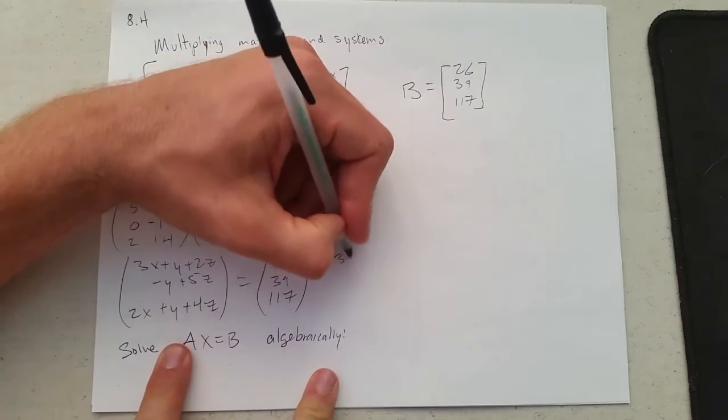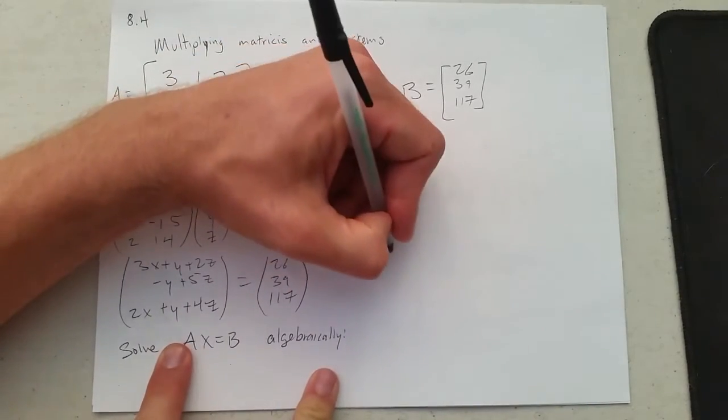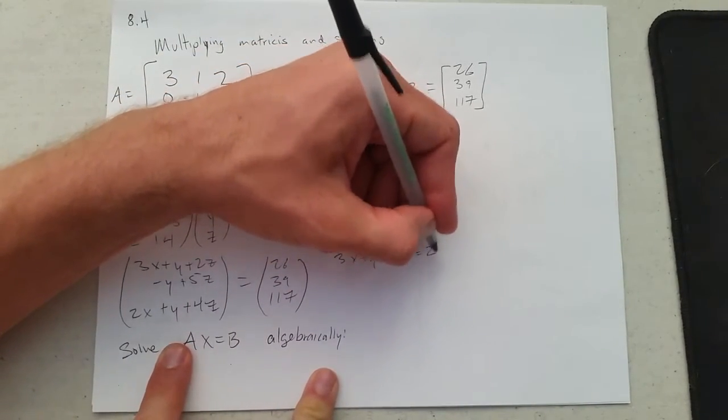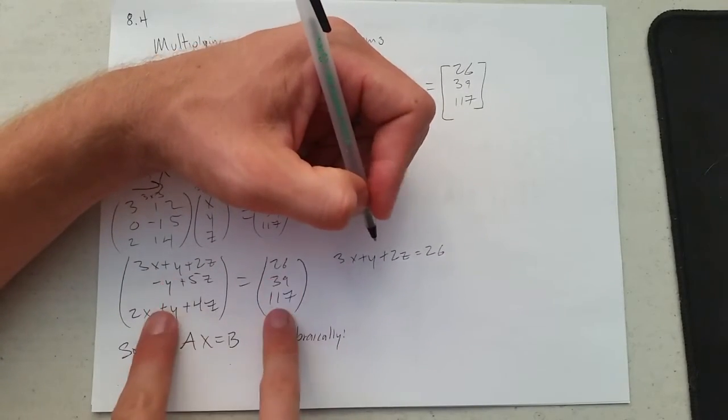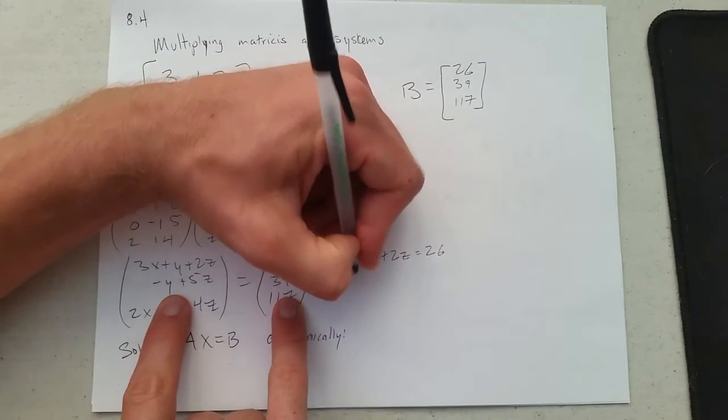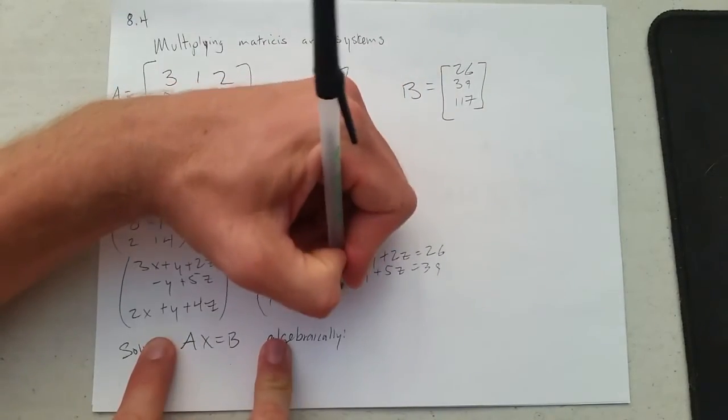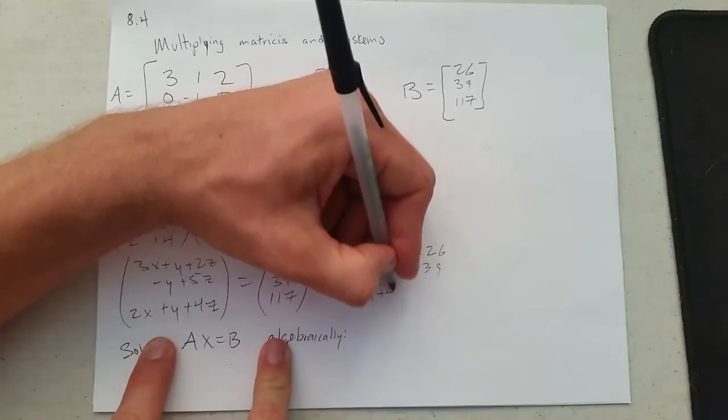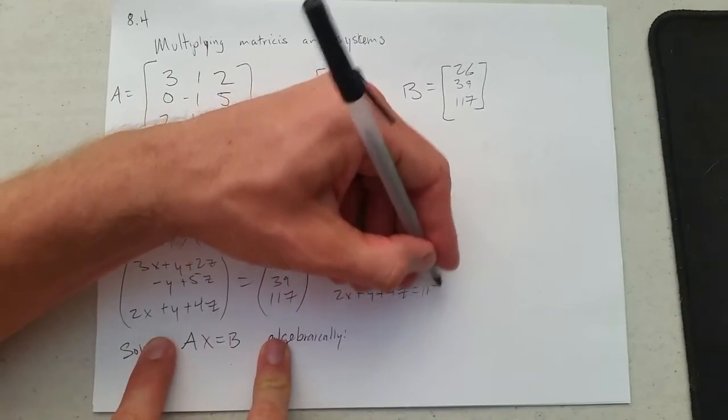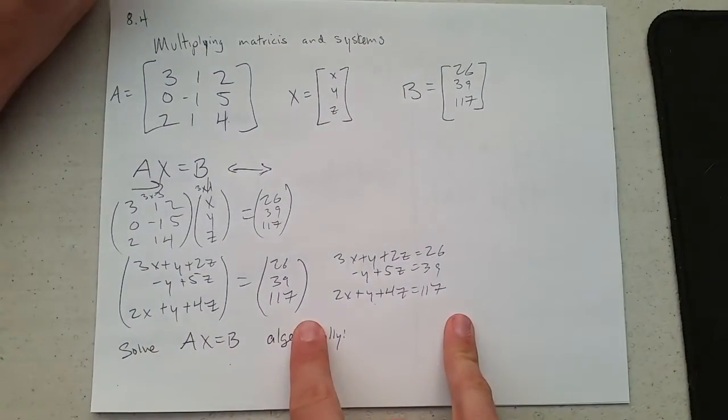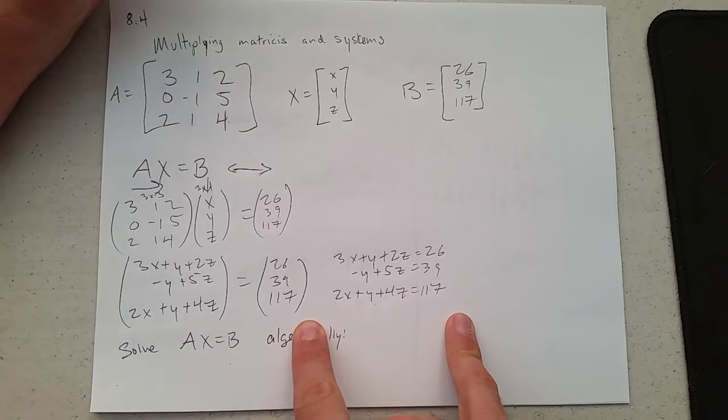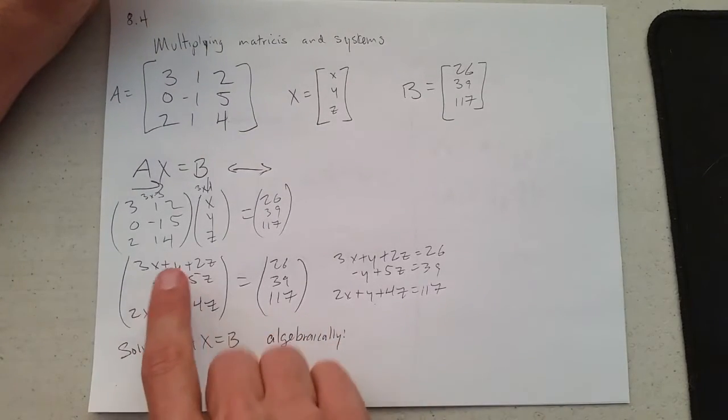So that means 3x plus y plus 2z equals 26. Matching the first entries, second entries, minus y plus 5z equals 39. And last up, 2x plus y plus 4z equals 117. That is a linear system.